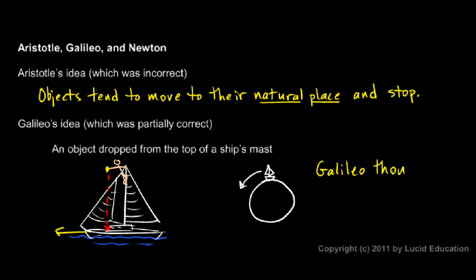Galileo thought that objects naturally moved in circles. So he was right in that the objects move. If they're moving, they naturally continue moving. But he was wrong about the shape of the path.